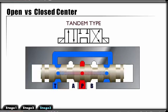This tandem-type configuration connects P to T while blocking work ports A and B. With P and T connected, we have an open center circuit. This center type is used in connection with a fixed displacement pump. Because A and B are blocked, the load can be held in neutral.